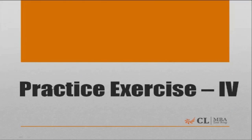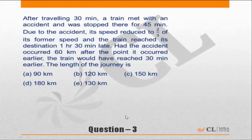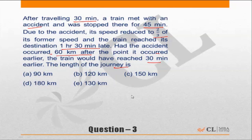Practice exercise 4 of the Time Speed Distance funda book. Question 3: After traveling 30 minutes, a train met with an accident and was stopped for 45 minutes. Due to the accident the speed reduced to two-thirds of its former speed and the train reached its destination 1 hour 30 minutes late. Had the accident occurred 60 kilometers after the point it had occurred earlier, the train would have reached 30 minutes earlier. What was the length of the journey? Let us first draw a schematic diagram to understand the data.